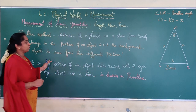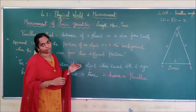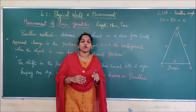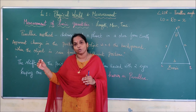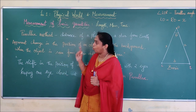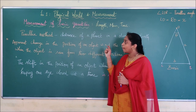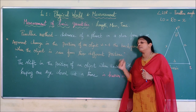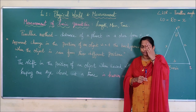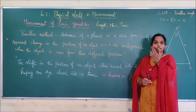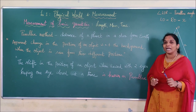This parallax method helps us to study the distance of a planet or a star. Since the parallax angle becomes very small, we can only use this method up to a distance of about 100 light years. Parallax is defined as the apparent change in the position of an object with respect to the background, when the object is seen from two different positions — for example, the left eye and the right eye.